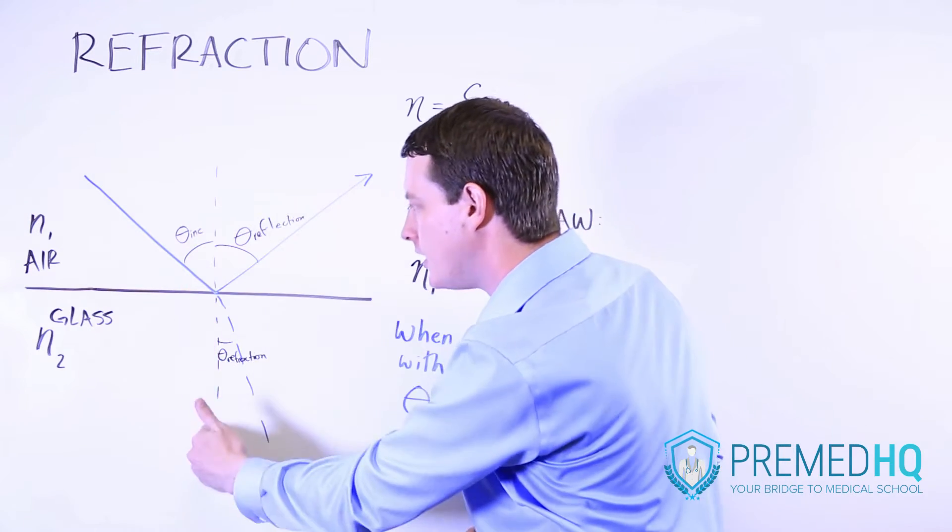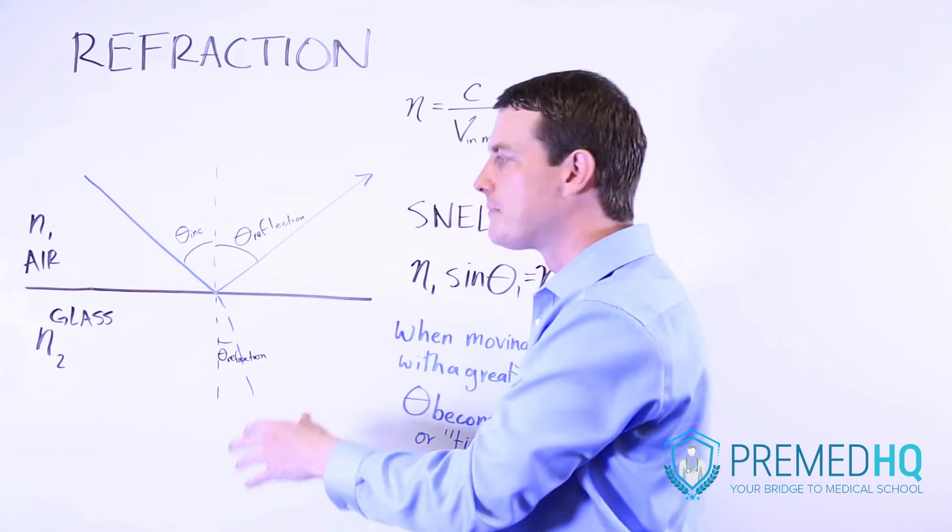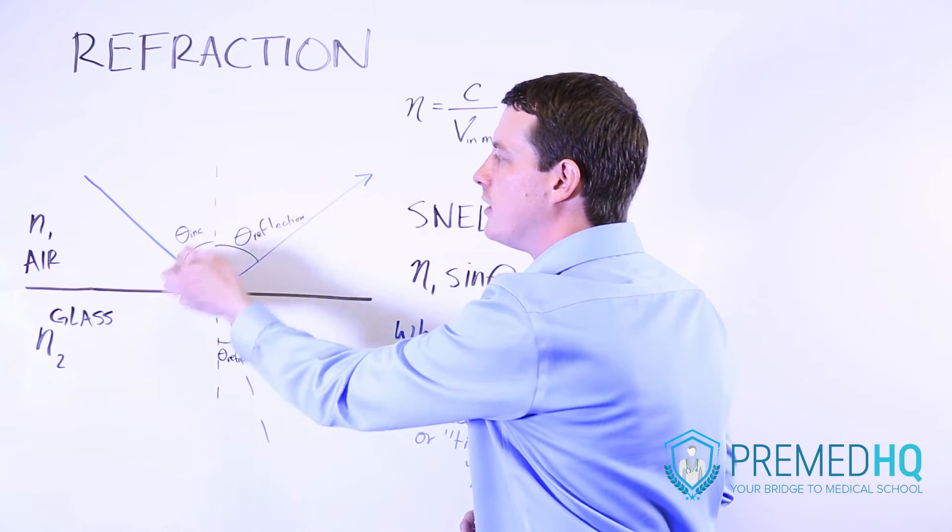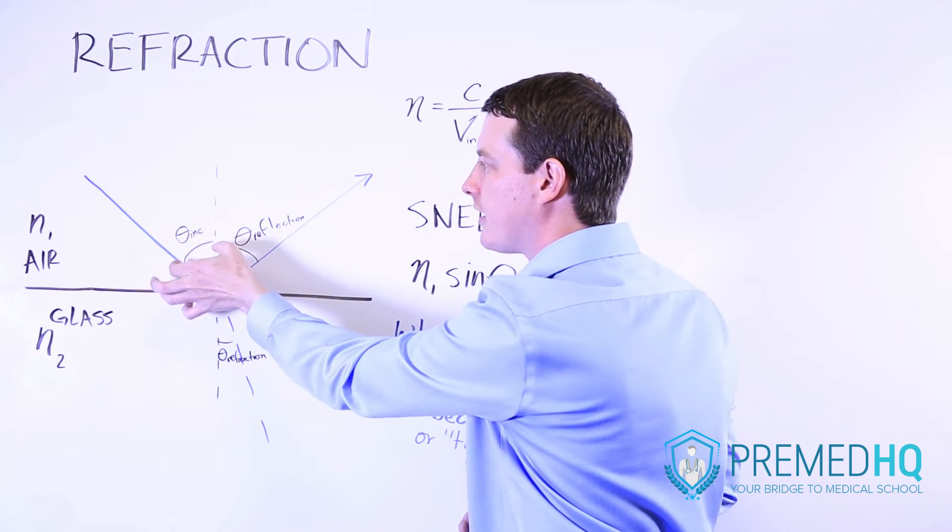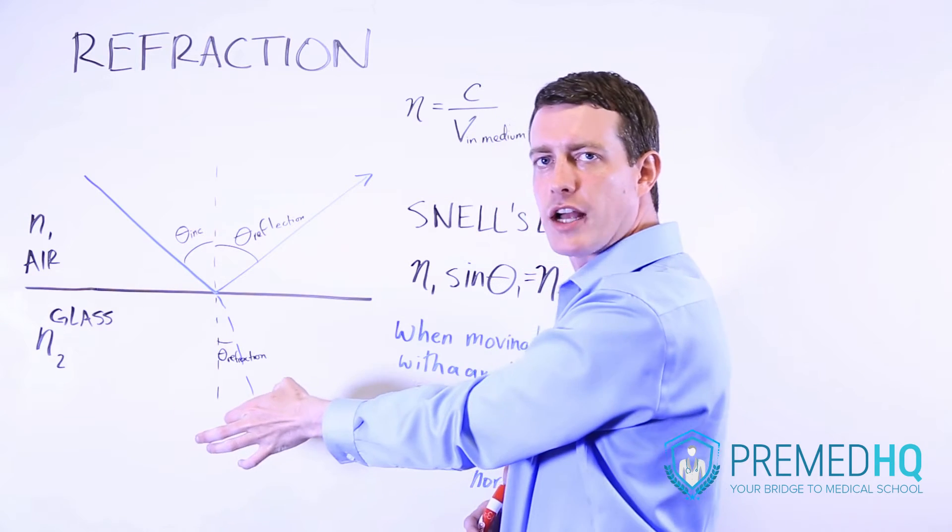So the vector that is perpendicular to the surface is the angle that we use in order to calculate angles of incidence, reflection, and refraction.